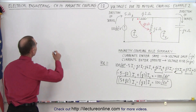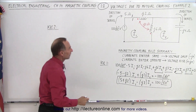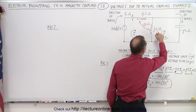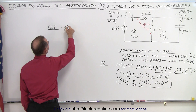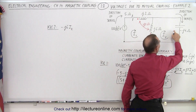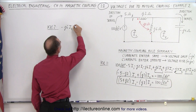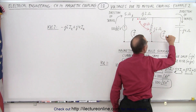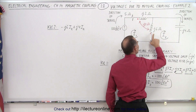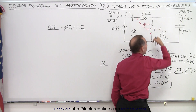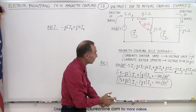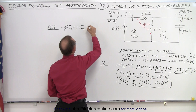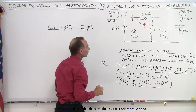Now let's do KVL2. Traveling around loop 2 in the same direction as I2, I have voltage drops for the two components: minus J6 times I2, and since the reactance here is negative, negative times negative gives positive J4 times I2. This component also carries current I1, but I1 travels in the opposite direction to my direction of travel, so that gives a voltage rise: plus J6 times I1.